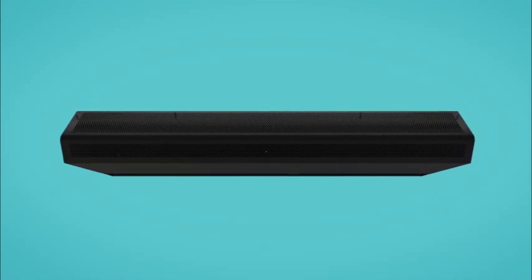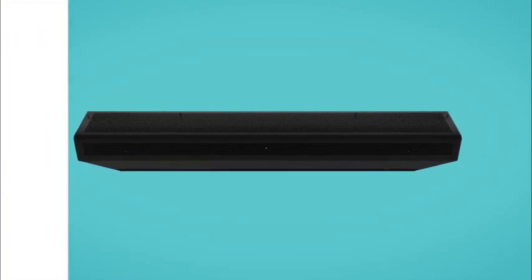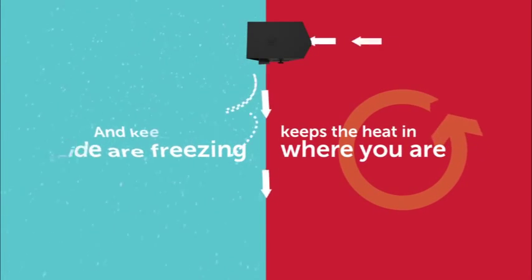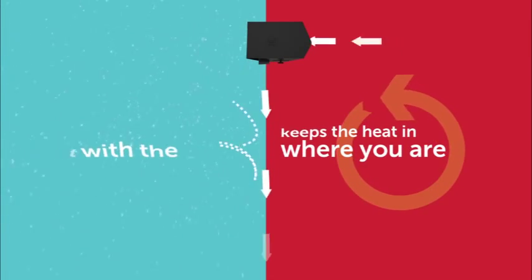So here's the basic concept of Mars air curtains. When the temperatures outside are freezing, the air curtain keeps the heat in where you are and keeps the cold temperatures out there with the snow.